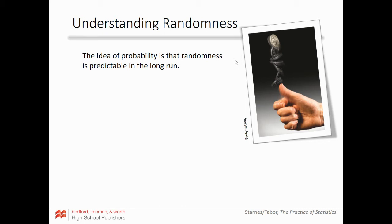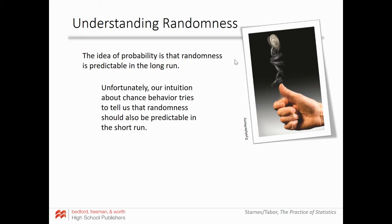Understanding randomness: the idea of probability is that randomness is predictable in the long run. Unfortunately, our intuition tries to tell us that randomness should also be predictable in the short run. If I flip a coin and get heads, many of you would say it should probably be tails next — but that's not exactly the case. In the short term, anything can happen. In the long run, though, the proportion will even out back to that 50% probability.